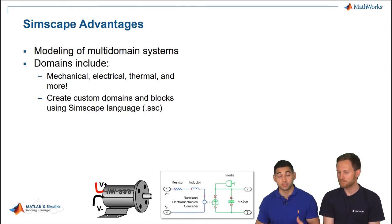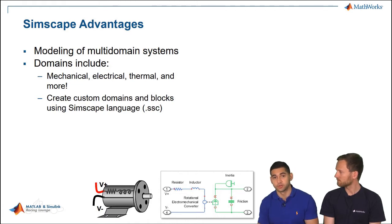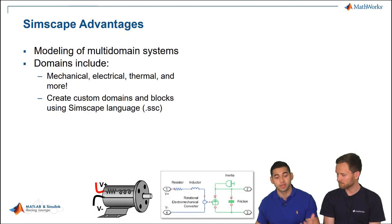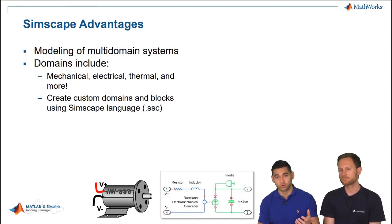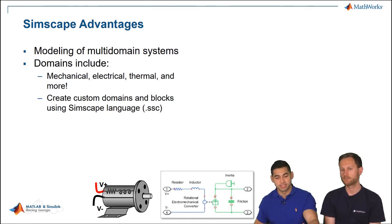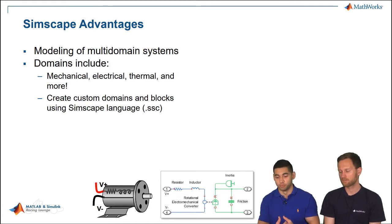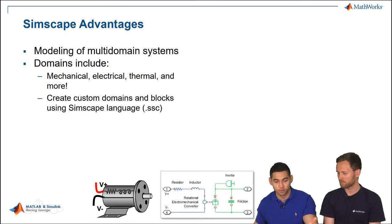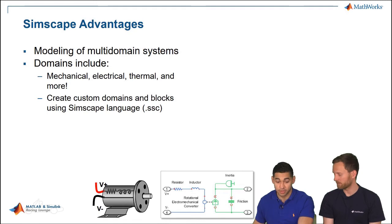In Simscape there are two variables associated with physical connections: the through variable and the across variable. In the rotational mechanical domain you have torque and rotational speed; their product equals power. In the electrical domain, voltage multiplied by current gives power output. This is important to keep in mind if you're creating your own custom domains, since these variables depend on each other.